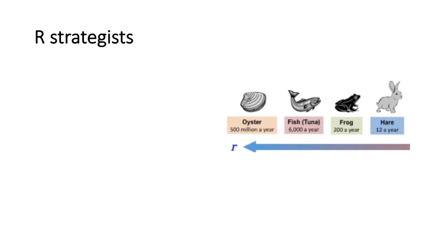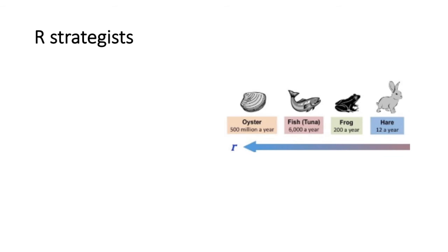Organisms that rely on exponential growth are known as R-strategists. Let's take a look at some of their reproductive strategies and resource allocation. Examples include oysters, which can produce about 500 million spawn a year; tuna, which can produce about 6,000 progeny in a year; frogs at 200; and rabbits, which are considered a mammalian R-strategist at 12 offspring a year.